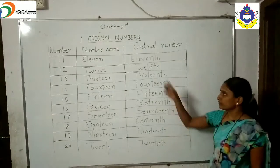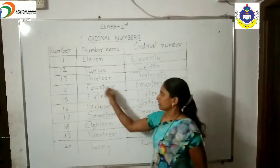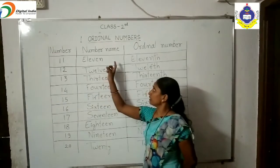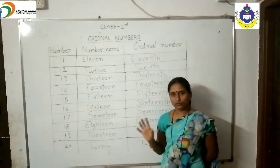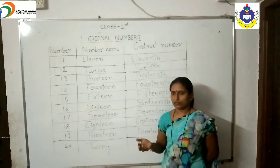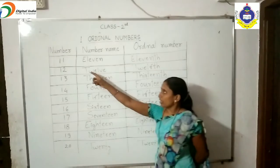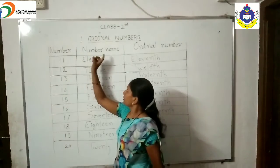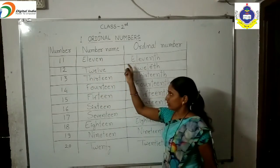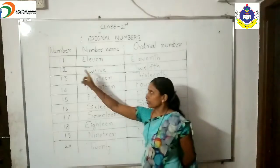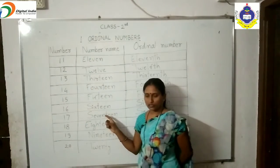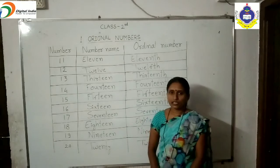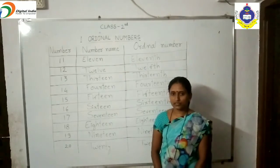You write down this number, number name, and ordinal number five times in your notebook. Okay? And you learn number, number name, and ordinal numbers from 21 to 30. This is your homework. Till then, stay home and stay safe.